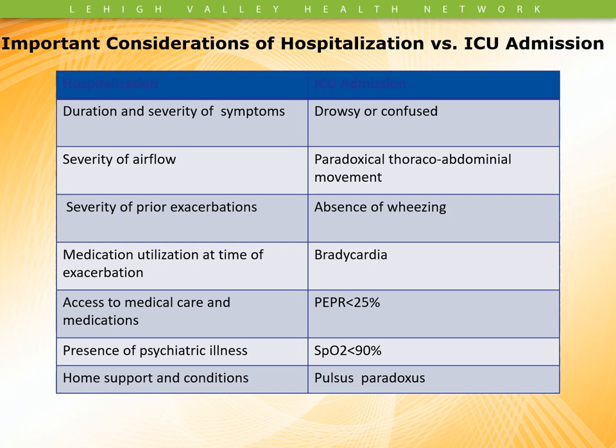When thinking about whether a patient should be admitted to the hospital, consider: duration and severity of symptoms, severity of airflow obstruction, severity of prior exacerbations, medical utilization at time of exacerbation — have they been using an inhaler nonstop? How many times have they had similar events? How obstructive are their airways? Access to medical care and medications is important — if you're going to discharge a patient, they've got to be able to do their treatments and get medicines. Consider presence of psychological illness, home support, and home conditions. You don't want to discharge someone to an environment full of all kinds of triggers, because the patient's just going to end up coming back, and this time coming back even worse.